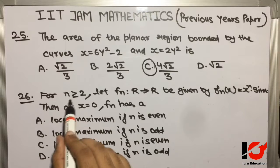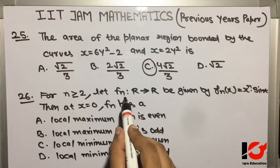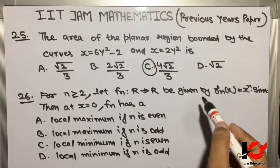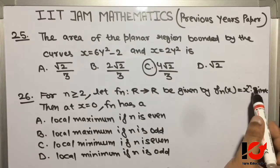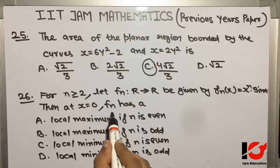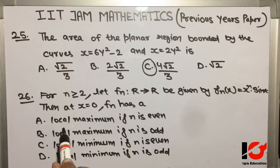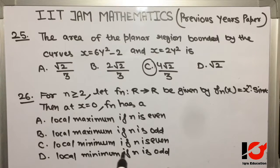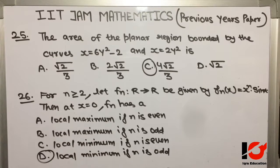Question 26: For n ≥ 2, let f_n be a function with domain ℝ and codomain ℝ given by f_n(x) = x^n * sin(x). Then at x = 0, f_n has: Option A: local maximum if n is even. Option B: local maximum if n is odd. Option C: local minimum if n is even. Option D: local minimum if n is odd. The required answer is Option D — local minimum if n is odd.